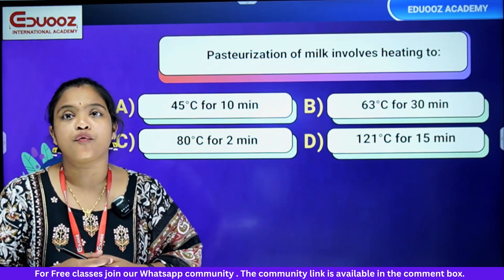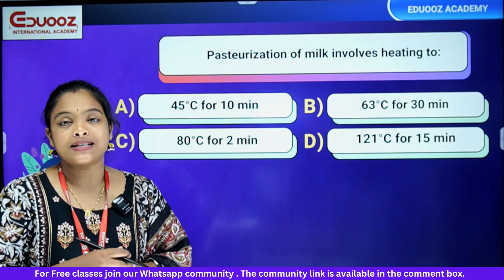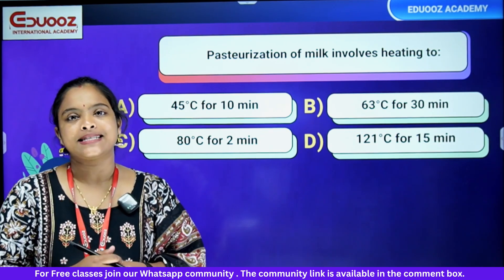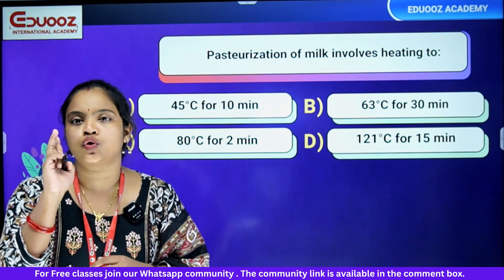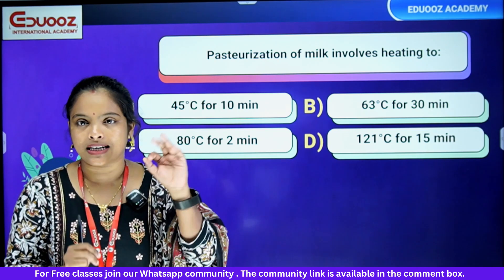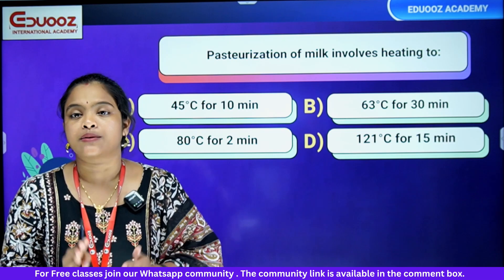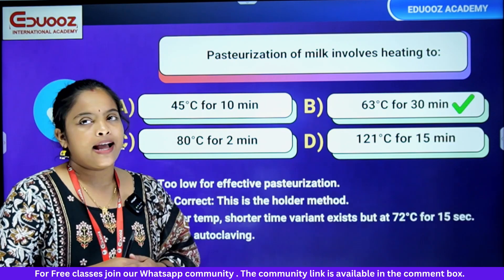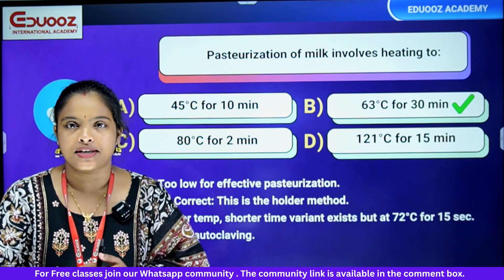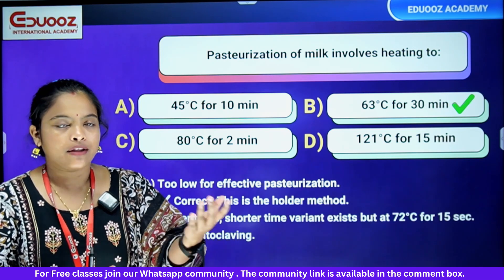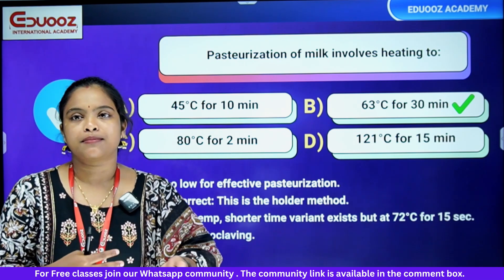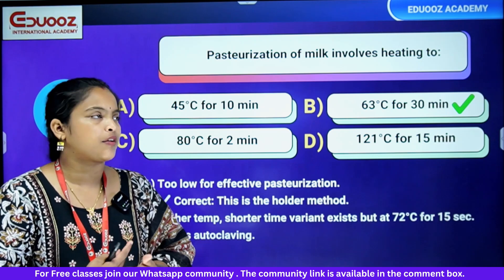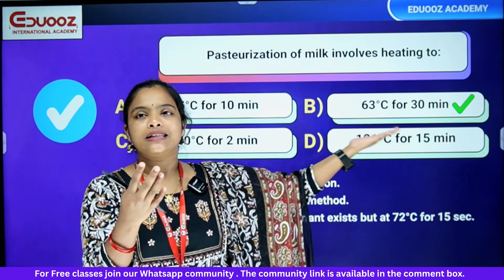Pasteurization of milk: which temperature and time? Options: 45°C for 10 minutes, 80°C for 2 minutes, 63°C for 30 minutes, 121°C for 15 minutes. The answer is 63°C for 30 minutes. We study pasteurization — the holder method is 63°C for 30 minutes, the flash method is 72°C for 15 seconds. This was Louis Pasteur's discovery.